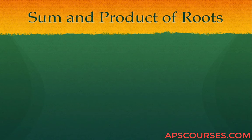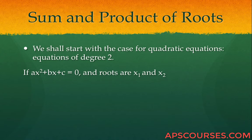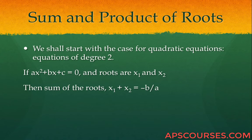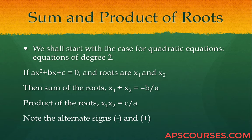Sum and product of roots — this is a property of roots. We start with quadratic equations, equations of degree 2. If ax squared plus bx plus c equals 0 and its roots are x1 and x2, then the sum of roots is minus b by a, and the product of roots is plus c by a. Notice the alternating signs: minus and plus.